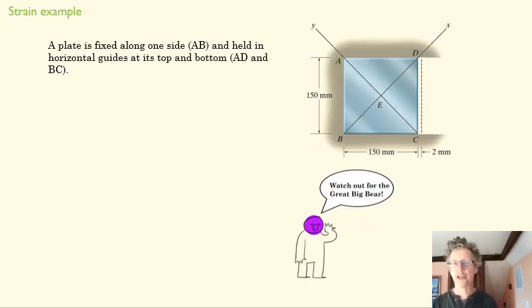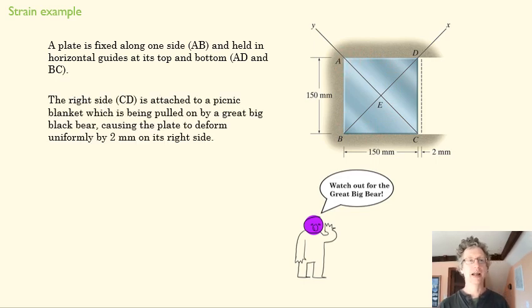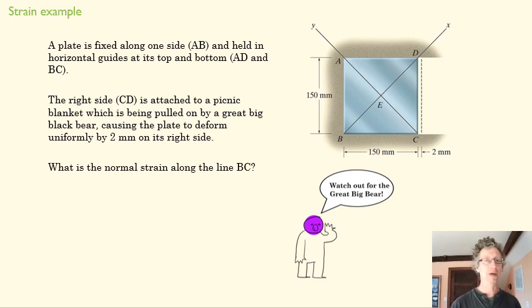Let's do a shear strain example. We've got a plate here that is fixed on one side, on A and B, and it is being pulled off to the right by a large bear. It's a really big bear that can create this much strain in an aluminum plate, but we're going with it. First, we want to find out what's our normal strain along BC.